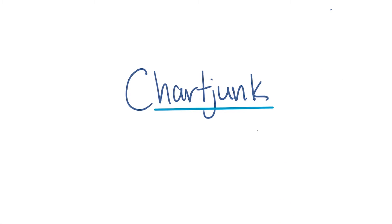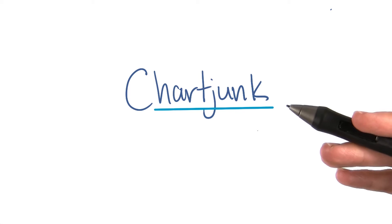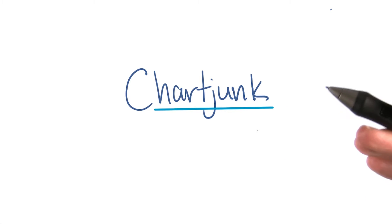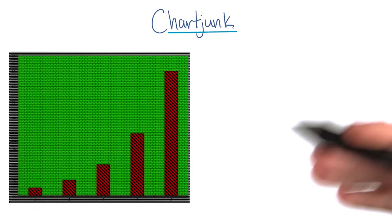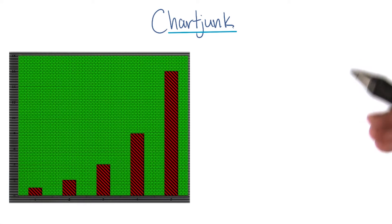Chart junk is a term that refers to all visual elements in charts and graphs that are not necessary to comprehend the information represented on the graph, or that distract the viewer from this information. Markings and visual elements can be called chart junk if they are not part of the minimum set of visuals necessary to communicate the information understandably.